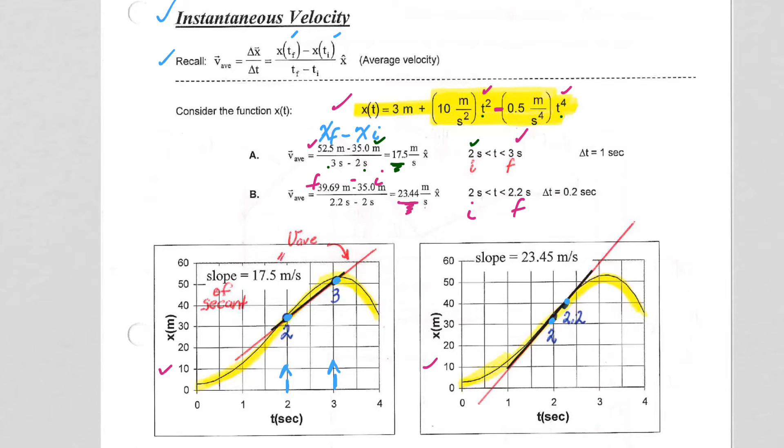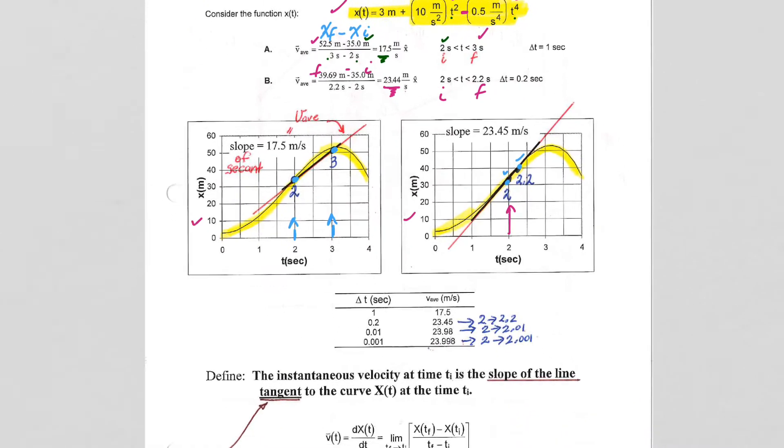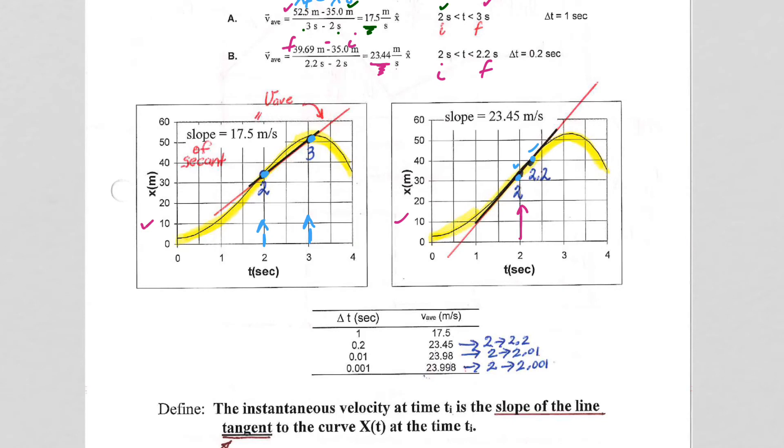We're just going to continue doing this because we want to know the velocity right at time t equals 2 seconds. So instead of going from 2 to 3 or from 2 to 2.2, we're going to keep going from 2 to smaller and smaller increments.